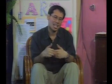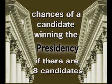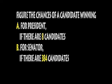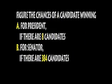Using classical probability, let's work with more examples. Figure out the chances of a candidate winning: A) For President, if there are 8 candidates. B) For Senator, if there are 384 candidates. We have to assume first that all candidates are equally well known, and that the elections will be fair.